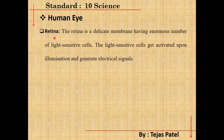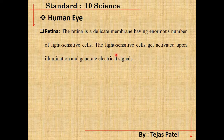Next, and most importantly, is the retina. As seen in the previous figure, it is located behind the lens. The retina is a delicate membrane having an enormous number of light-sensitive cells. When light rays impinge on the retina, these light-sensitive cells are activated and generate electrical signals.